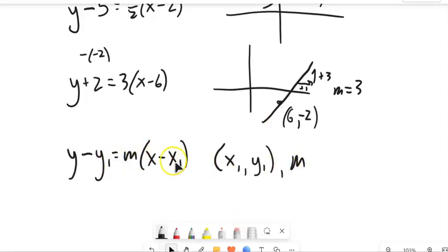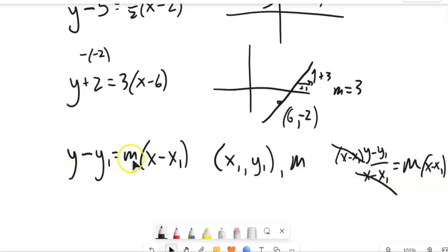And this actually comes straight from the definition of slope. Slope is change in y over change in x, and change in y is subtracting the y's, and change in x is subtracting the x's. And notice that this x minus x sub 1, if I multiply both sides by that, this divides out to a 1, and I get that. So that's my general form for it.